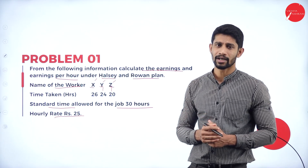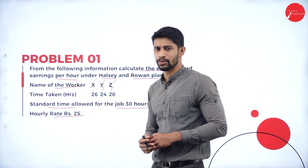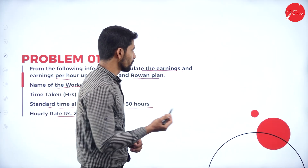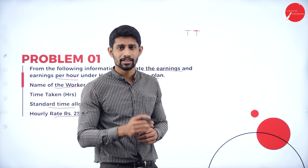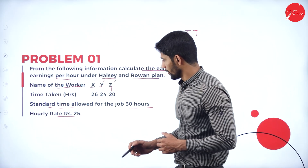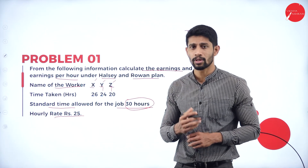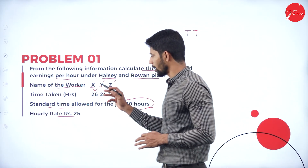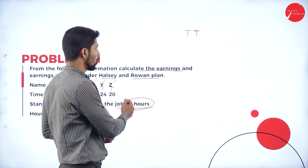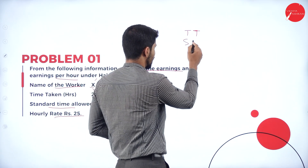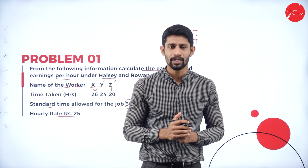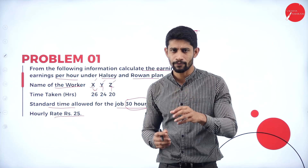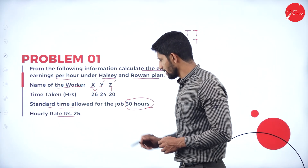We are also supposed to find out the hourly earning of Mr. X, Y, and Z. Standard time allowed for the job is 30 hours and hourly rate is 25 rupees. Now, if you know four things, you can easily solve the problem. The first thing is TT — time taken. The actual time taken by the worker to complete the work is called time taken. Next is ST — standard time, which is the time fixed by the employer to complete a particular work. Here the standard time is 30 hours.